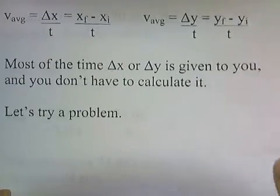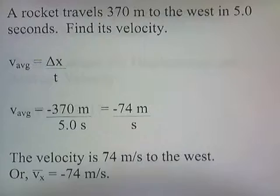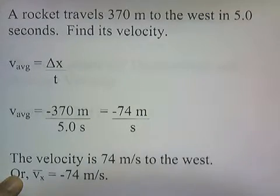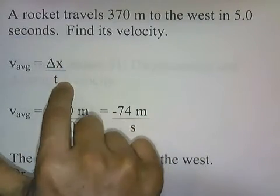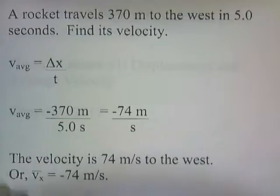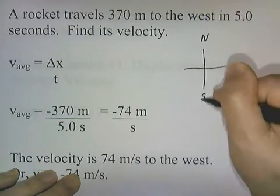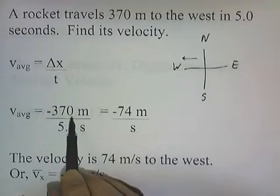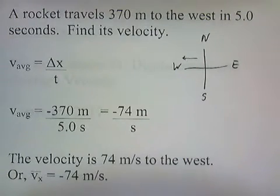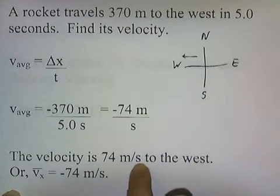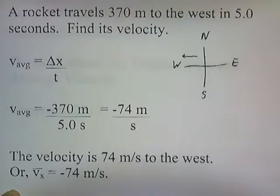A rocket travels 370 meters to the west in five seconds — find its velocity. It's moving west, which is a horizontal direction, so average velocity equals delta x over time. Traveling to the west means traveling in a negative direction, so we write negative 370 meters divided by 5 seconds, which gives negative 74 meters per second. The velocity is negative 74 meters per second, or 74 meters per second to the west. So you should write vx equals negative 74 meters per second.